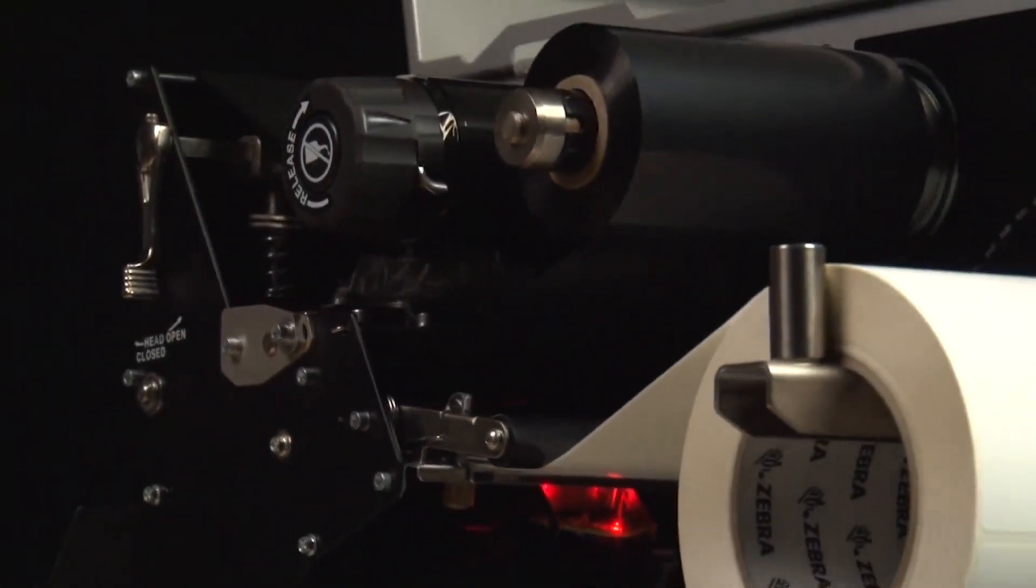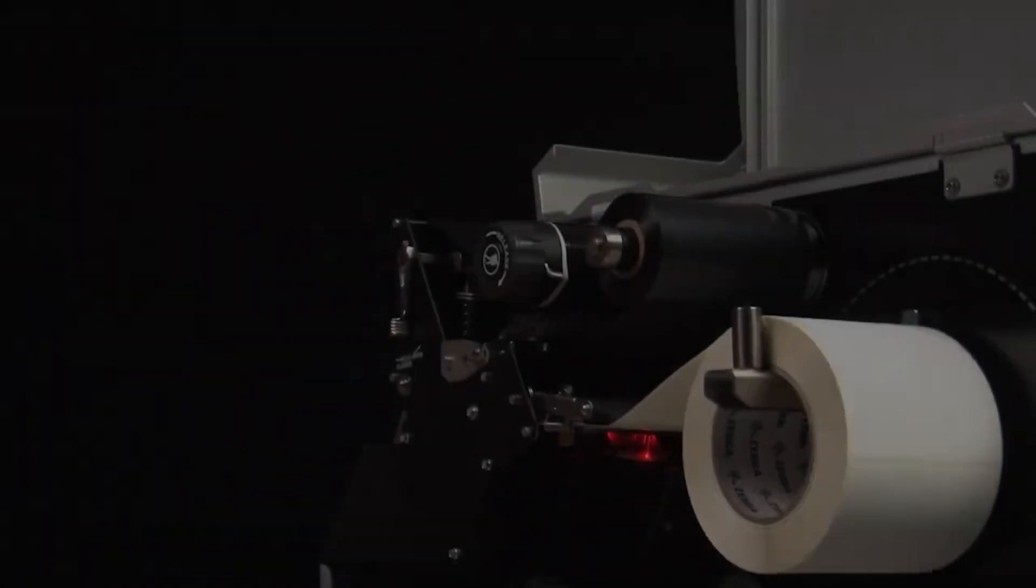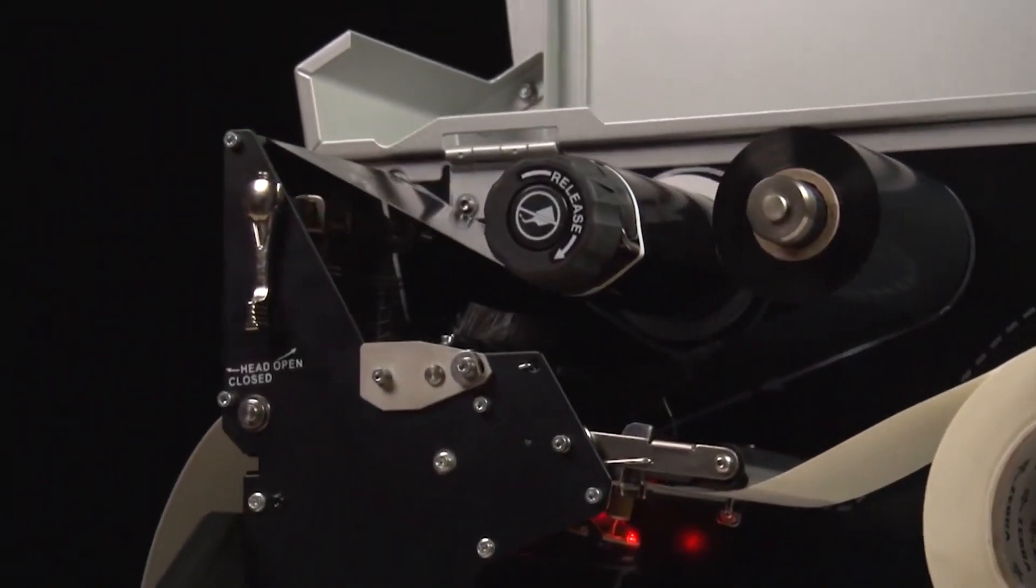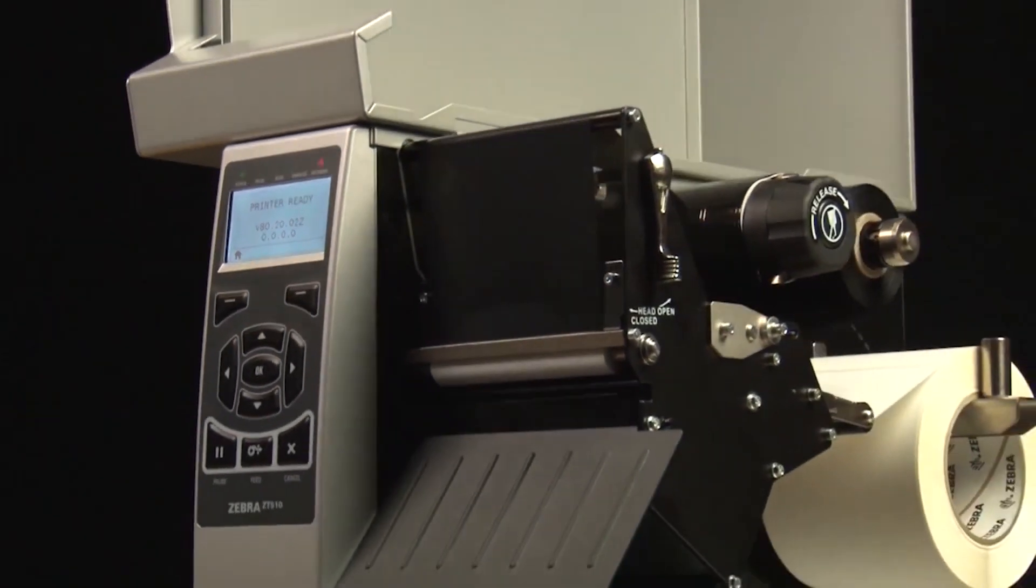In order to place the image in the correct position on the media, you must first identify the features in the media you'd like the printer to detect. Second, you must make sure the sensors in your printer are set up to detect those features. Most media contains features that identify the start position.